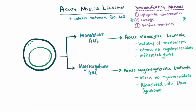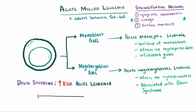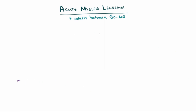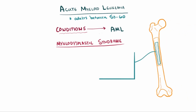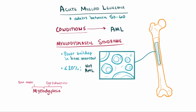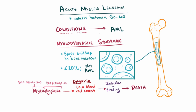Another important subtype is megakaryoblastic leukemia — a buildup of megakaryoblasts. Like monoblasts, these don't have myeloperoxidase either, but there's an association with Down syndrome before the age of 5. In general, patients with Down syndrome have an increased risk of acute leukemia — usually acute megakaryoblastic leukemia before age 5, and ALL after age 5. There are also conditions that can lead to AML, such as myelodysplastic syndrome, characterized by an abnormal buildup of blasts in the bone marrow below 20%, often causing cytopenia. Patients can die due to infection or bleeding, or progress to AML if their blast percentage exceeds 20%.